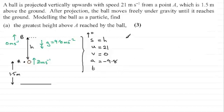So what equation would we use to link these variables S, U, V and A together? Well the one I'm going to use then is going to be the one that leaves T out and that's going to be V squared equals U squared plus 2AS.